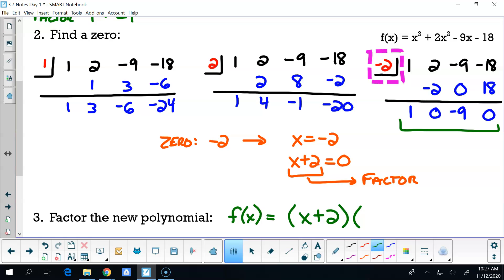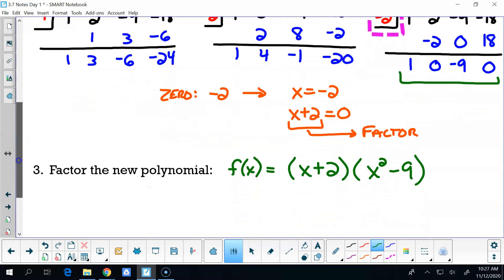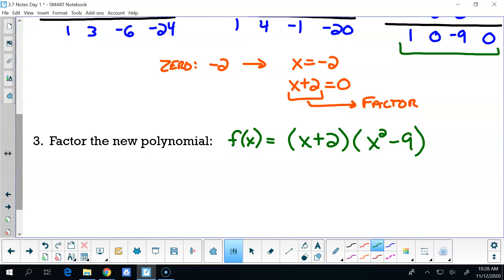So that would mean then that f(x) would now be (x + 2) times this thing. Well, 3 was my original degree. I dropped that down by 1, so then that would be x² + 0x - 9. Is x² - 9 factorable? Yay or nay on x² - 9 being factorable? What do you got? I don't know.